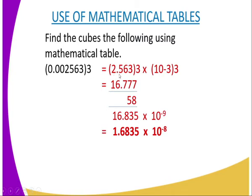And by writing it in standard form, you will get it as 2.563³ times 10⁻³ because the decimal has moved three steps toward the right-hand side. And also, (10⁻³)³, then you raise to power 3 again.